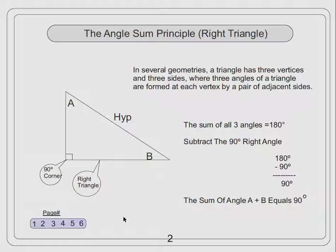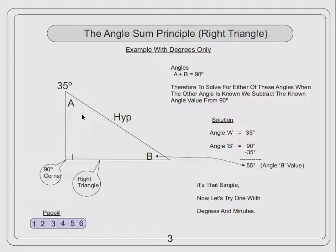So to solve for an unknown angle, we use the angle sum principle, and we take the given value of angle A, which is 35 degrees, and subtract it from 90 degrees to arrive at the value for angle B. So under the solution here, we restate the fact that the given angle A is 35 degrees, and the solution for angle B is 90 degrees minus 35 degrees. And the answer is 55 degrees angle B value.